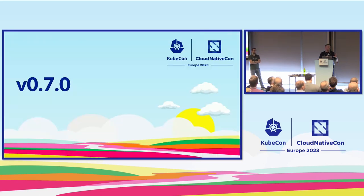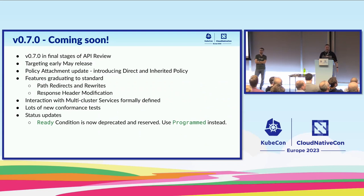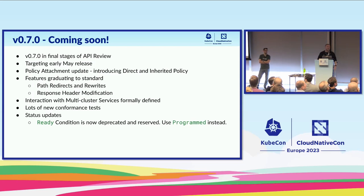Continuing on that theme, v0.7.0 is going to come out real soon — hopefully just after KubeCon. We're in the final stages of API review, targeting early May. It includes a policy attachment update, some features graduating to standard, formally defined interaction with the multicluster services proposal, heaps more conformance tests, and the 'ready' condition is now deprecated and reserved — use 'programmed' instead.